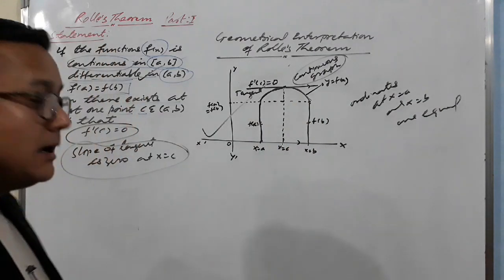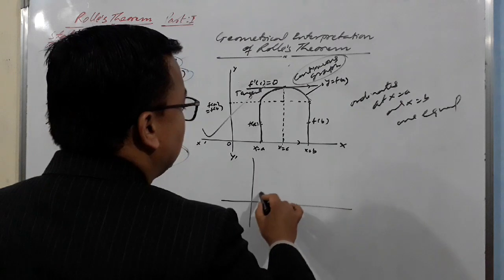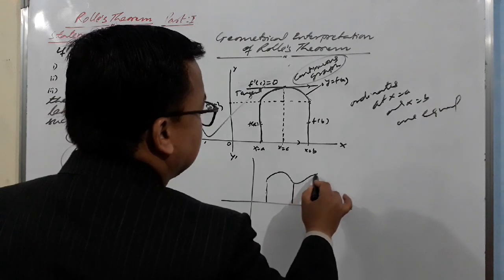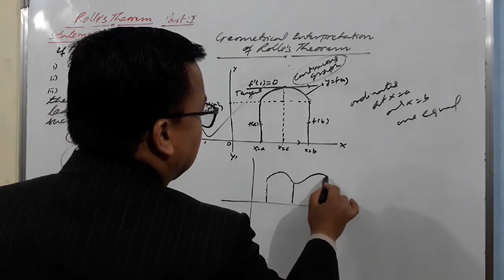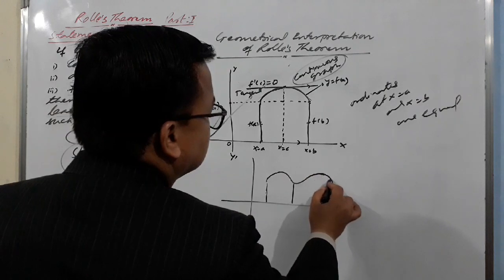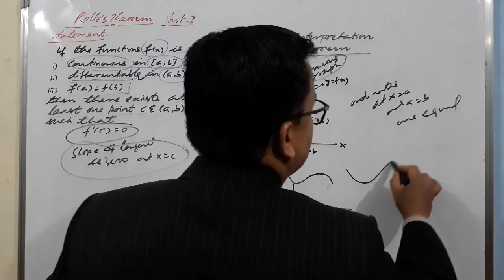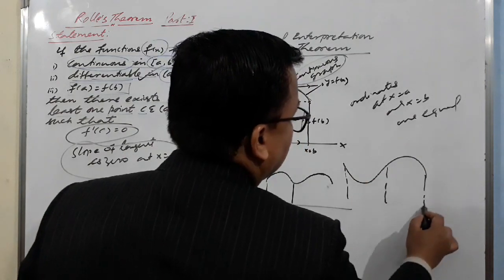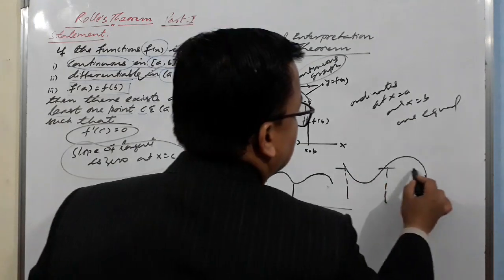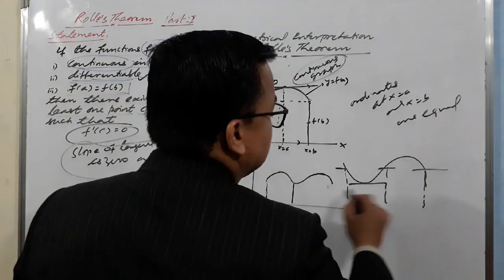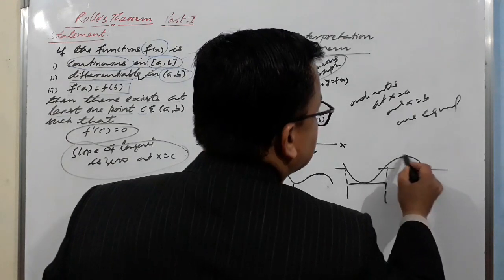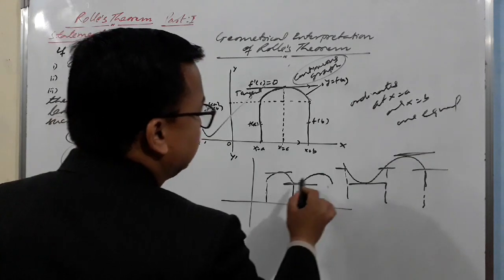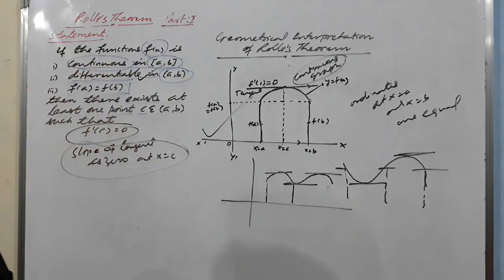This is not the only type of graph possible. We can have different types of curves — various shapes — and in each case, at the point c, the tangent is parallel to the x-axis. Here the tangent is parallel to the x-axis, here also, and here also. There can be multiple such points, but at least one always exists when all three Rolle's conditions are satisfied.